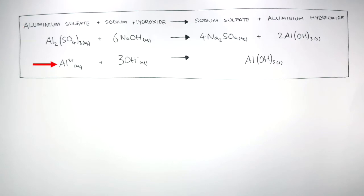Here is a word equation, a balanced symbol equation, and an ionic equation to summarise how aluminium sulphate can react with sodium hydroxide to form sodium sulphate and aluminium hydroxide. Aluminium hydroxide is the white precipitate formed, as shown by the state symbol S.